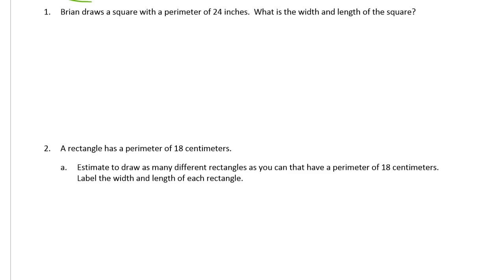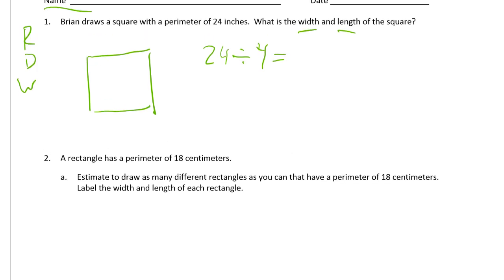This is a word problem so we're gonna RDW it. Let's read, draw, and write. My drawing is going to be a picture of a square. It's got a perimeter of 24 inches so we know that the square has four equal sides. So that means that 24 divided by 4 equals s for side of the square. S equals 6, and those are inches.